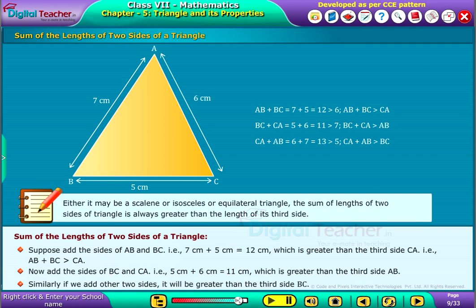Make a note that whether it may be a scalene or isosceles or equilateral triangle, the sum of lengths of two sides of a triangle is always greater than the length of its third side.